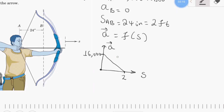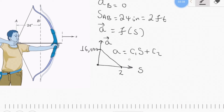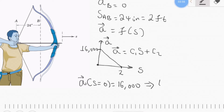Acceleration can be expressed as a = c1·s + c2, just like a linear line function. Now let's substitute numerical values to calculate the constants. At s = 0, acceleration = 16,000. Substituting: 16,000 = c1·(0) + c2, so c2 equals 16,000.